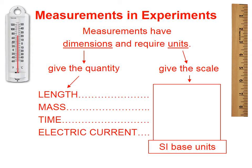When we do measurements in experiments, those measurements have dimensions and they require units. Dimensions give the quantity, such as length, mass, time, and electric current, and the units give the scale.